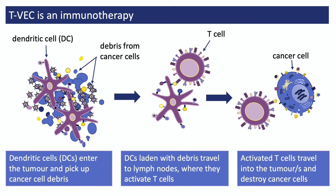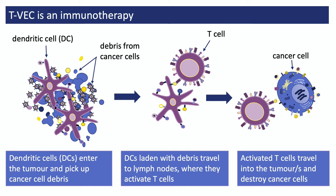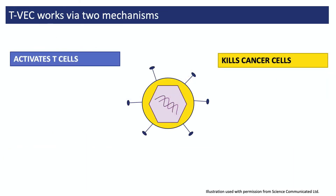In response, some T cells become active and travel to nearby tumours, attacking and destroying any remaining cancer cells. In some people, these T cells actually travel far and wide throughout the body, mopping up cancer cells wherever they find them. This means that even tumours that haven't been injected can start getting smaller. So TVEC has the ability to directly kill cancer cells and to trigger an immune response directed against the person's cancer cells.